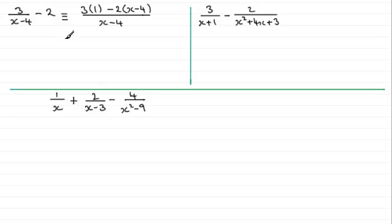So expanding this we've got 3 times 1 which is 3 and then we've got minus 2x and then minus 2 times minus 4 is plus 8 and that is all divided by x minus 4. And we can simplify this further. We can say this is identical to and we've got 3 plus 8 which is 11 and so we have 11 minus the 2x and that is divided by x minus 4.